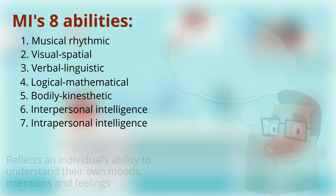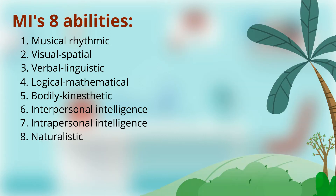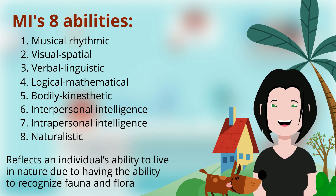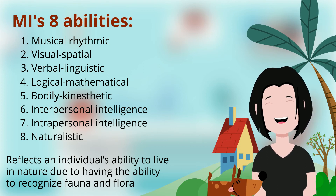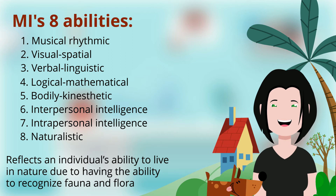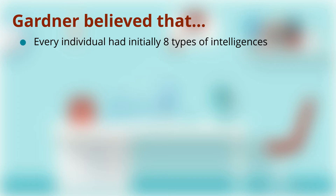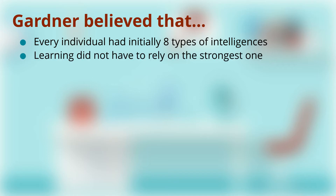The eighth is Naturalistic intelligence, which reflects an individual's ability to live in nature due to having the ability to recognize fauna and flora in the natural world. Gardner believed that every individual initially had all eight types of intelligences at varying competency levels, and that learning did not necessarily have to rely on the strongest of the intelligences.